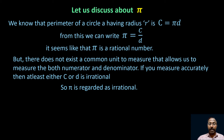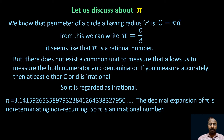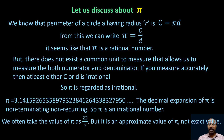Pi is an irrational number. The value of pi is 3.1415926535897932384626... The decimal expression of pi is non-terminating and non-recurring, so pi is an irrational number. We often take the value of pi as 22/7, but that is an approximate value only, not the exact value of pi.